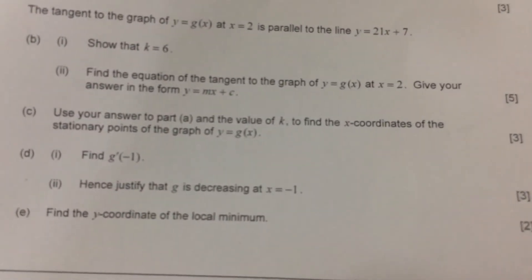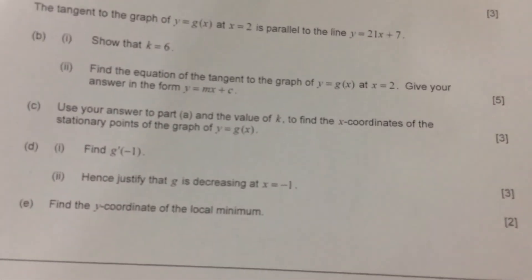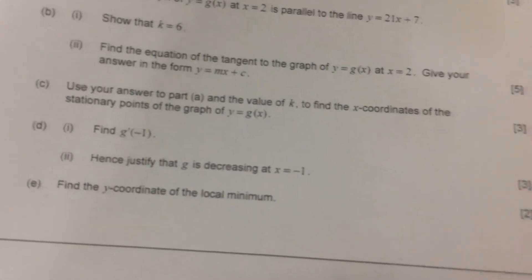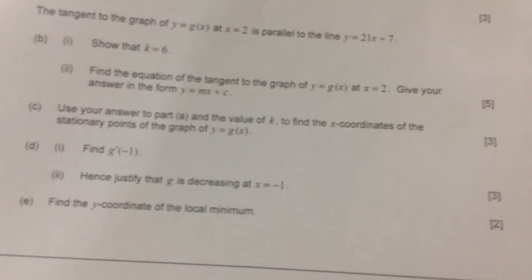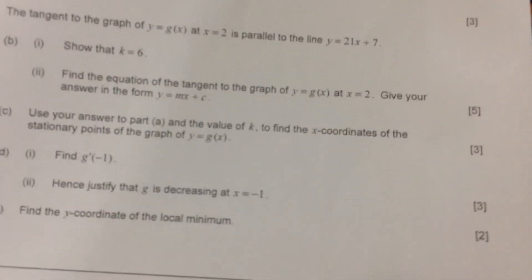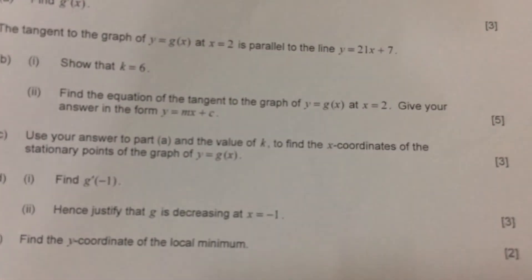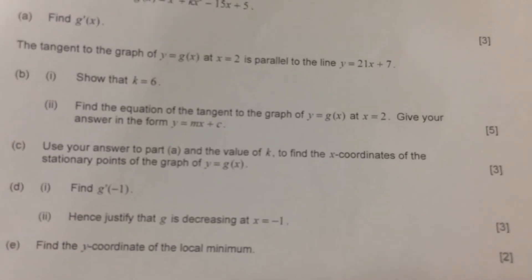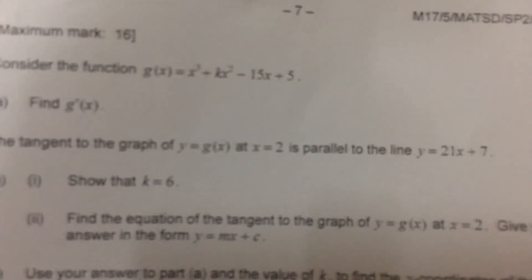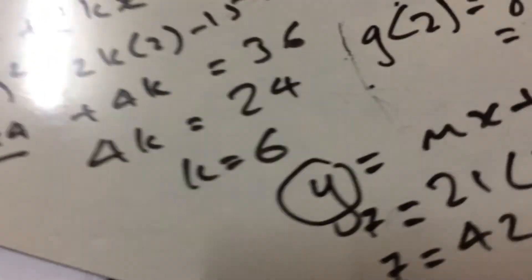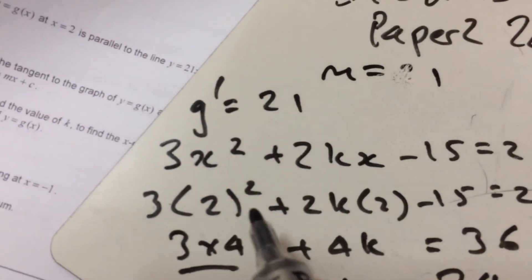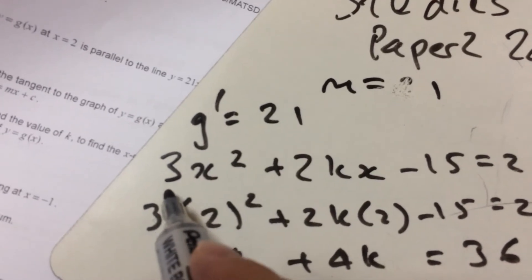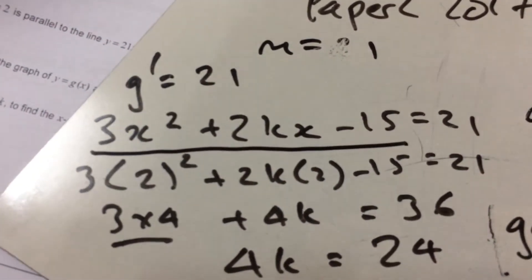Then, it says use your answer to part a, the value of k, to find the coordinates of the stationary points of the graph. Now, if you remember, stationary points are where that gradient equals 0. So, let's go back to what that gradient function was, which we had over there, 3x² + 2kx - 15.